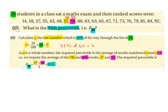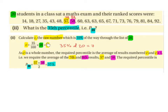Part 2. What is the 35th percentile? We need to calculate C, the raw number, which is 35% of the way through the list of 20. So C is 35 over 100 times 20, which is 7. So 35% of 20 is 7.